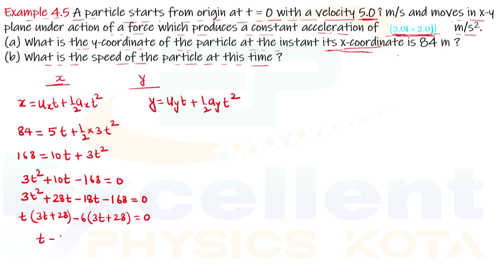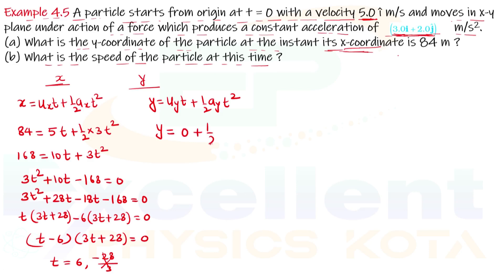So we get (t − 6)(3t + 28) = 0, giving two values: t = 6 and t = −28/3. Since time cannot be negative, t = 6 seconds is the valid solution. Putting this into the y-equation: y = u_y·t + ½·a_y·t² = 0 + ½·2·(6)² = 36 meters. So the y-coordinate is 36 m.